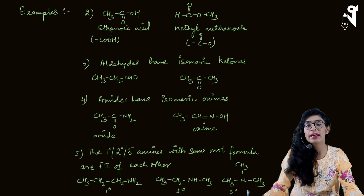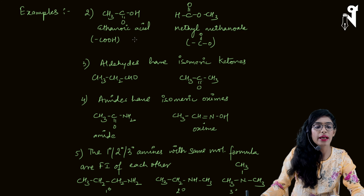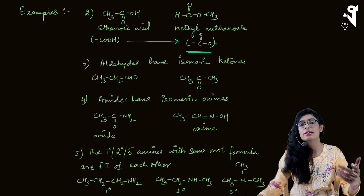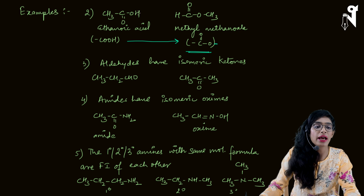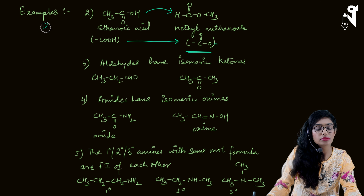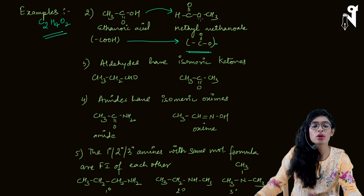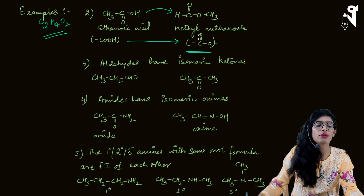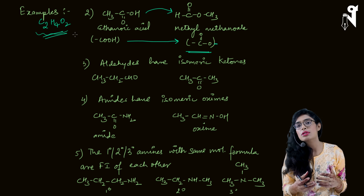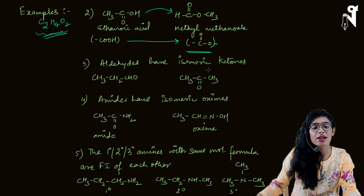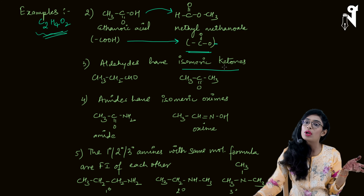Here are some listed examples. First, ethanoic acid — a carboxylic acid — can have its functional isomer as an ester. The COO group serves as an ester and acts as a functional isomer of carboxylic acids. For example, ethanoic acid and methyl methanoate both have the molecular formula C2H4O2. If you get a molecular formula like this, try to make different compounds with different functional groups — those will be functional isomers of each other.